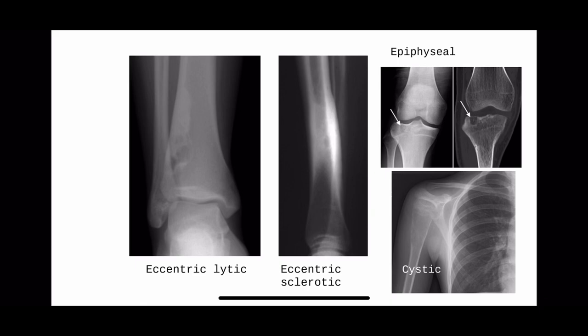This tumor is eccentric and lytic. The first words that should come to your mind are eccentric and lytic. It is more than 3 centimeters — it is not fibrous cortical defect, though you can use that term. This is fibrous cortical defect or non-ossifying fibroma. This one is eccentric and sclerotic — has to be osteoid osteoma. This one is epiphyseal, looks benign, cannot be GCT — chondroblastoma. This cystic lesion has a diameter no more than the native bone — looks like a simple bone cyst.